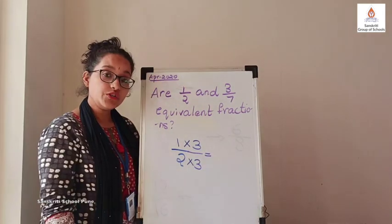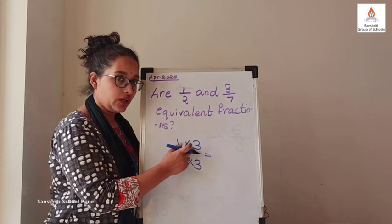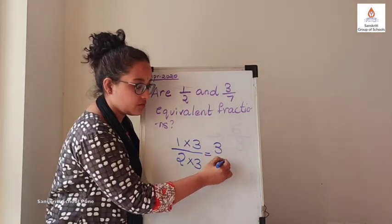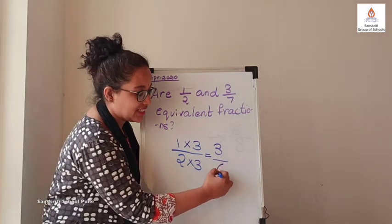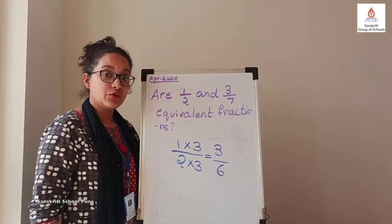What do you get? 1, 3's? 3 upon 2, 3's? 6. Right?